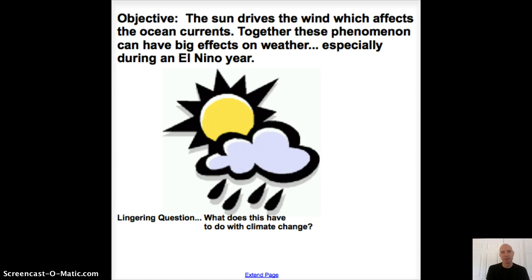Hello everyone. Today the objective is really all about how the Sun drives the wind and the ocean currents as well, and both of those things really affect the weather that we experience here on Earth. And so the Sun is behind it all, and while we go through this, the question we want to have in the back of our mind is how is climate change involved with all of this, and what are the impacts with that?